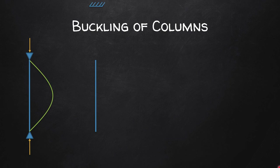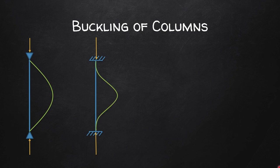Here we have a column where both the top and bottom ends are fixed. Applying a compressive force in both directions, the column will buckle like this. As you can see, at the top there is no slope, and at the bottom there is also no slope. The slope starts forming a little further in, and maximum buckling occurs at the middle.